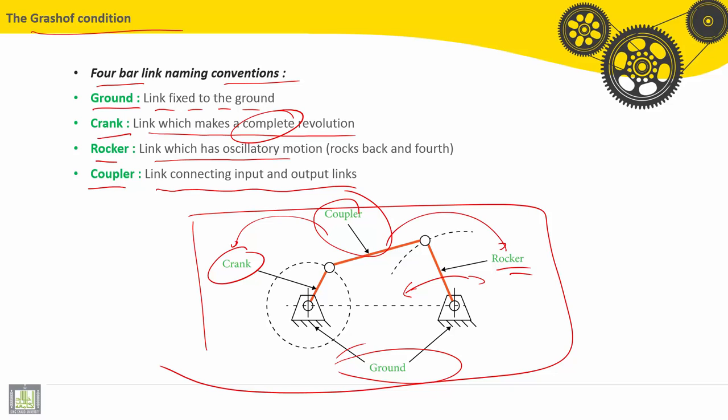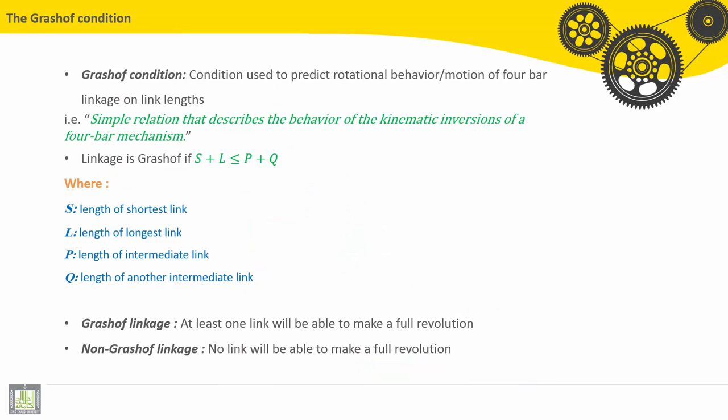The Grashof condition is a condition used to predict rotational behavior and motion of four-bar linkage based on link lengths. Simply, a rotation that describes the behavior of kinematic inversions of a four-bar mechanism.